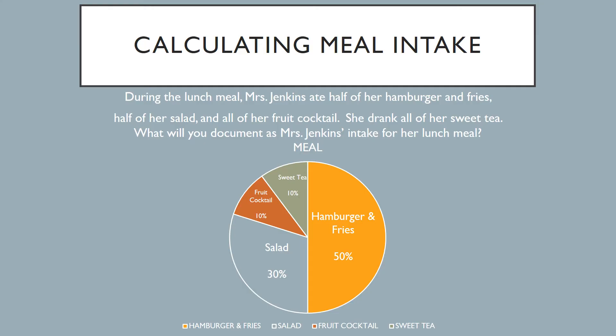So if Mrs. Jenkins ate all of her food on her meal tray and drank all of her sweet tea, you would document 100% — she ate 100% of her meal. But pertaining to this question, that's not the case. Mrs. Jenkins ate only half of her hamburger and fries. Her hamburger and fries account for 50%, so you'll just have to do basic math — division. Half of 50 is 25, so you divide two into 50, which gives you 25%.